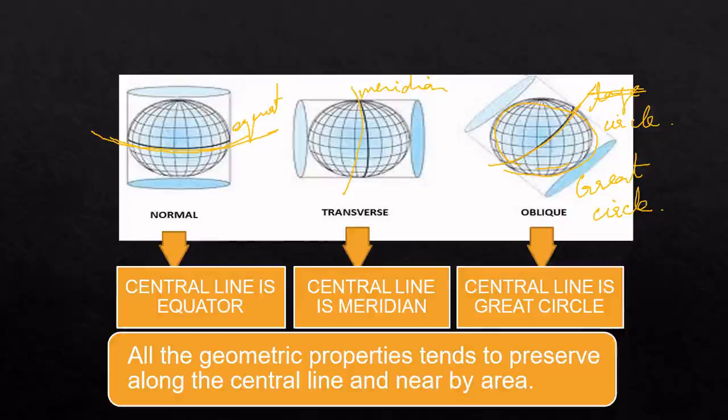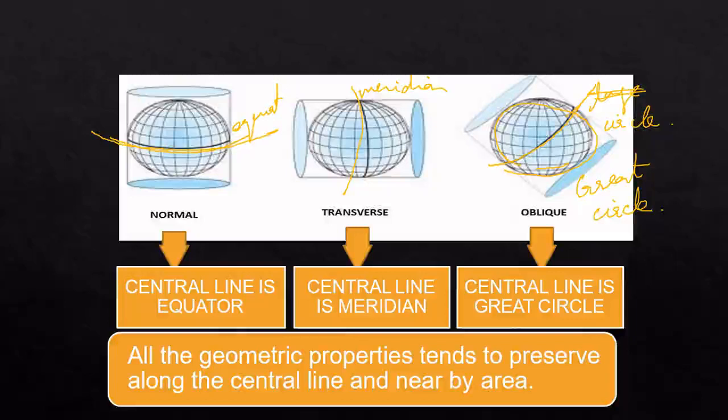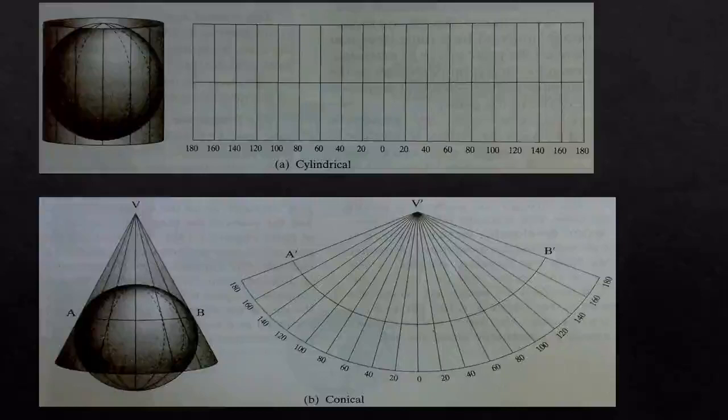For the normal case, the center line is the equator; for the transverse case, the center line is the meridian; and for the oblique case, the center line is the great circle. All geometric properties tend to be preserved along the central line and the nearby area, depending upon whether it is the equator, meridian, or great circle.